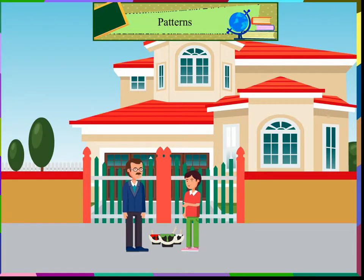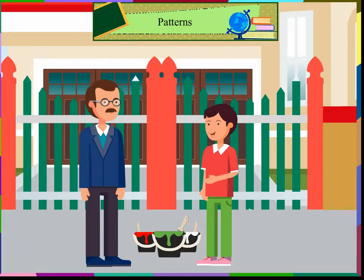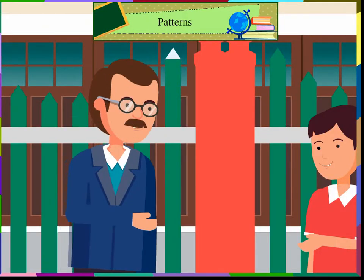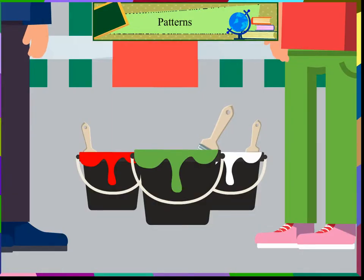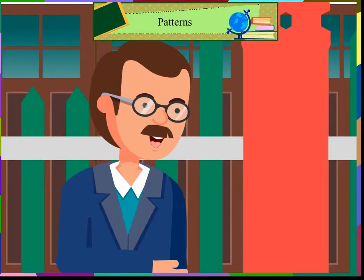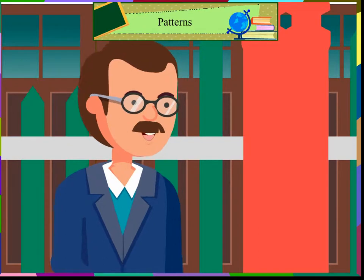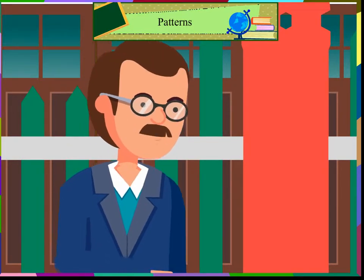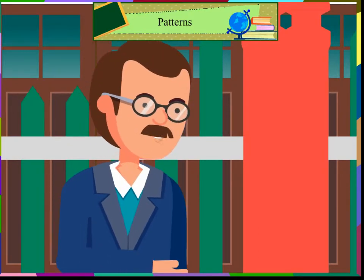Varun and his father decided to paint the front gate of their house. Varun asked, 'Father, what are the colors we are going to use?' His father replied, 'Let us use the same colors — white, green, and red.' Varun asked, 'Shall I paint with the white color first?' Father said, 'Please understand the pattern and then start painting.'